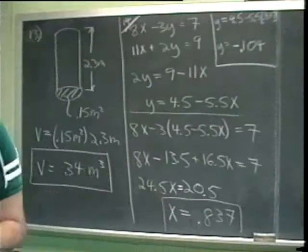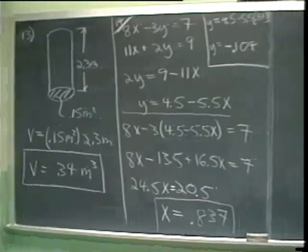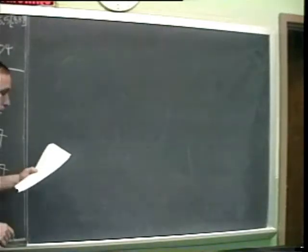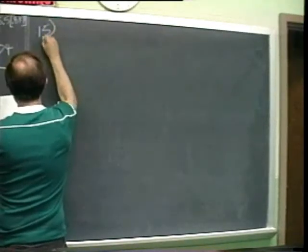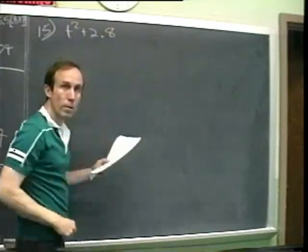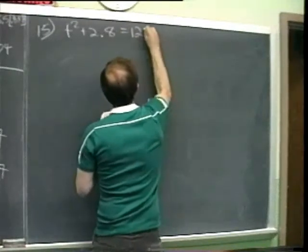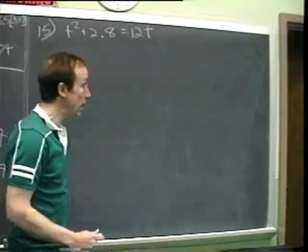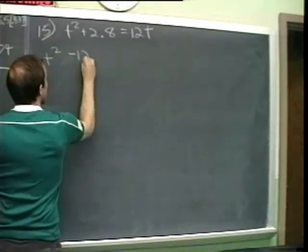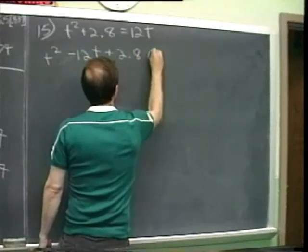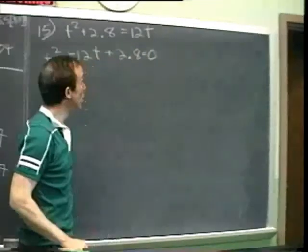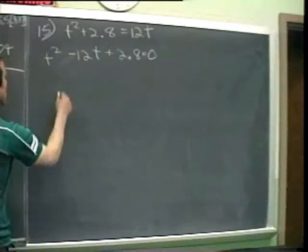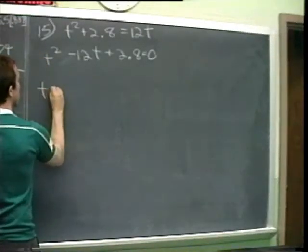Number 15: they give us an equation and say solve for t. The equation reads t squared plus 2.8 equals 12t. Since we have a t squared, let's get that into the form of the quadratic equation: t squared minus 12t plus 2.8 equals 0 — always equals zero. We've got all three terms: a t squared term, a t term, and a constant term, so we must use the quadratic formula.